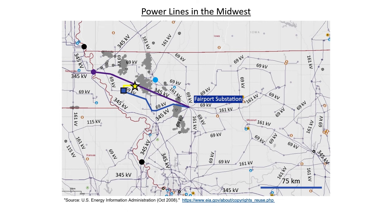What would hypothetically happen if the nuclear power plant needed to be taken offline for maintenance or refueling? Where would the little town get its electricity then? The substation just outside of the nuclear power plant has a connection up to the Nebraska City coal plant, which provides another source of power. The Fairport substation also has a 345 kilovolt connection down to the Iotan coal-fired power plant.